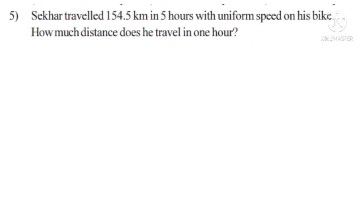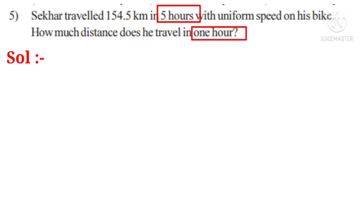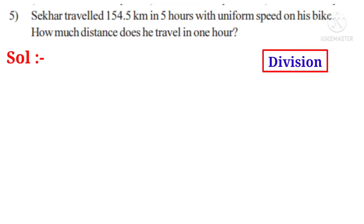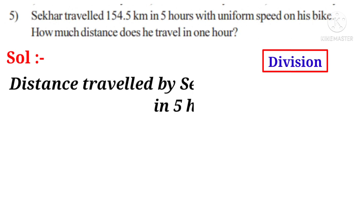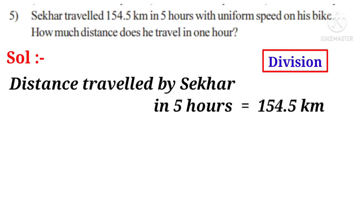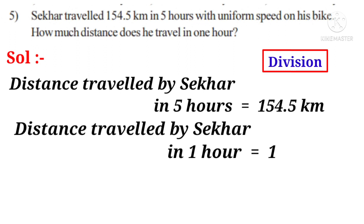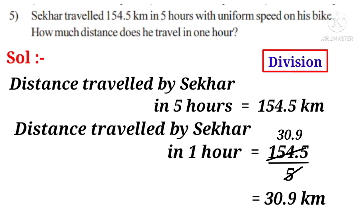5th problem: Shaker traveled 154.5 kilometers in 5 hours with uniform speed on his bike. How much distance does he travel in 1 hour? Solution: The number of hours decreased from 5 to 1, so the operation is division. Distance traveled by Shaker in 5 hours is 154.5 kilometers. Distance in 1 hour equals 154.5 divided by 5. On simplification by 5, that is equal to 30.9 kilometers.